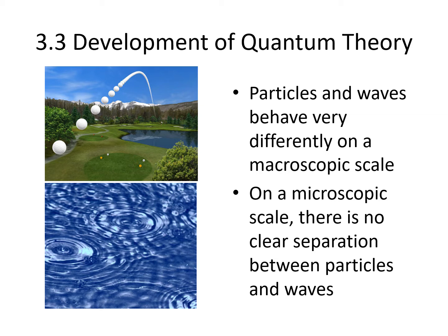Quantum mechanics works best on a microscopic scale, where there is no clear separation between particles and waves. We have seen light, which is typically thought of as a wave, behaving like a particle. Now we will look at electrons, which are typically thought of as particles, behaving as waves.